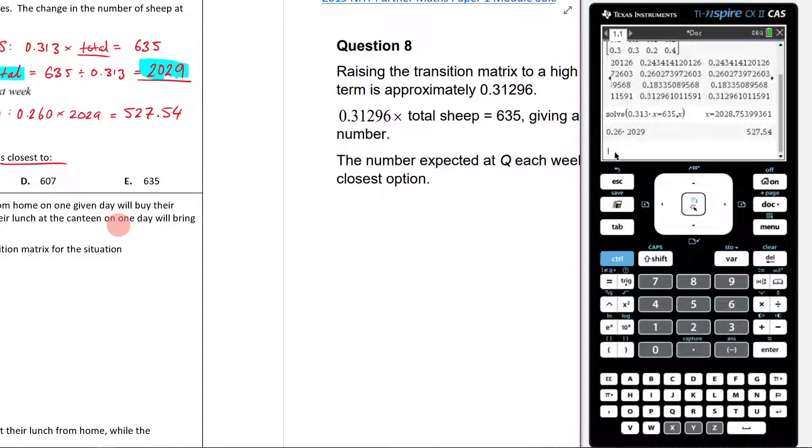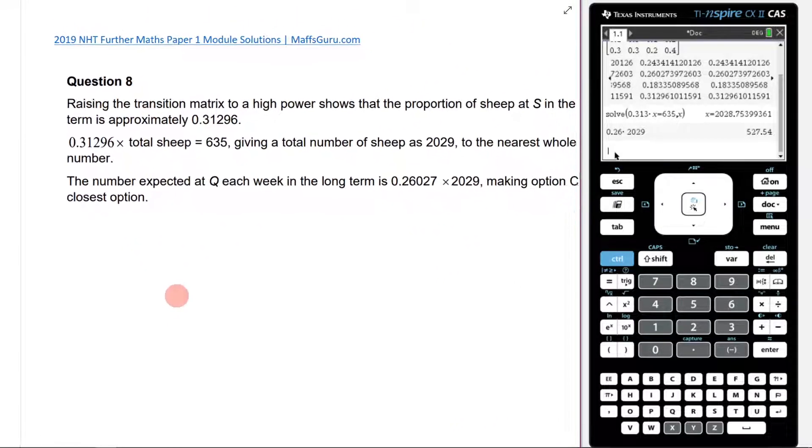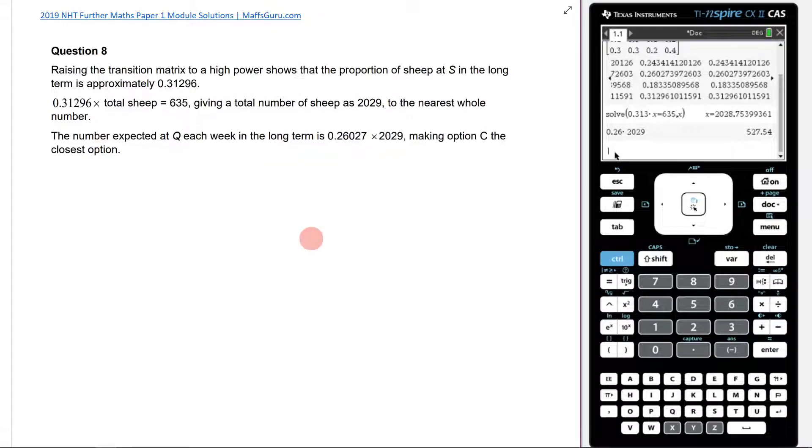If we now look at the examiner's report, unfortunately because this is a Northern Hemisphere exam, it doesn't give us the percentage breakdown of who got what correct, but it still gives us, because this was a poorly answered question, a breakdown on how to answer it. It says, raising the transition matrix to a high power shows the proportion of sheep at S. When it says proportion, that's referring to the percentage of each one. So by raising the transition matrix to a high portion, you get the proportion or percentage of each sheep at S, or everywhere, in the long term is approximately 0.31296. You take that number, you times it by the total amount, and you get 635, giving the total amount of sheep as 2029 to the nearest whole number.